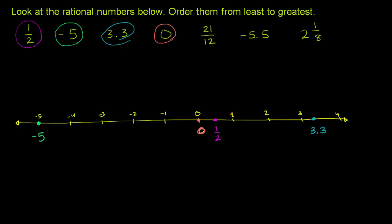Then we have 21 over 12, which is an improper fraction. And to think about where we should place that on the number line, let me do this in this blue color. To think about where to place it on the number line, let's change it into a mixed number. It makes it a little bit easier to visualize, at least for my brain.